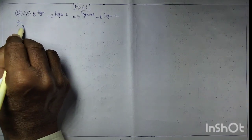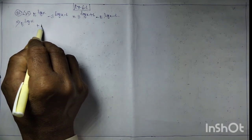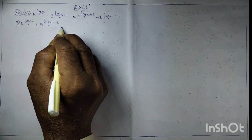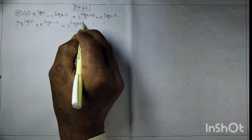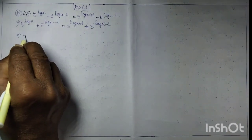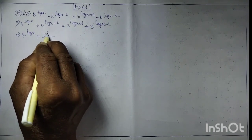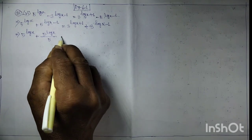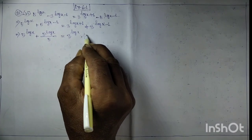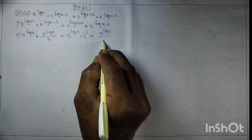This implies 5 to the power log x plus 5 to the power log x minus 1 is equal to 3 to the power log x plus 1 plus 3 to the power log x minus 1. Implies 5 to the power log x plus 5 to the power log x by 5, equal to 3 to the power log x into 3 to the power 1 plus 3 to the power log x by 3 to the power 1.